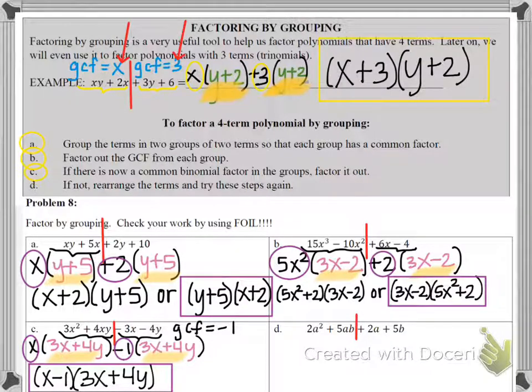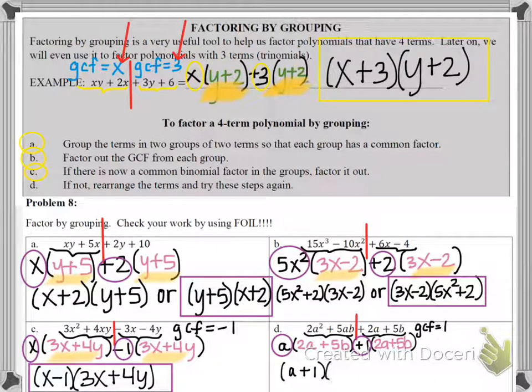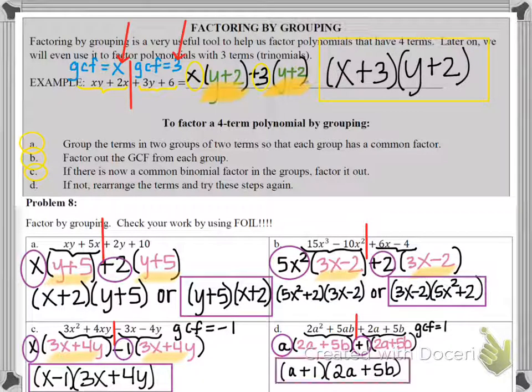And finally, let's look at part D. I'm going to split it down the middle. The first two terms have a GCF of a. So that leaves me with a times 2a plus 5b. Now, the second two terms, the 2a plus 5b, they don't have anything in common. But notice, 2a plus 5b matches the binomial from the first part of the problem. So since they don't have anything in common, the only thing I can factor out is a positive 1. So my GCF is just 1. And then 2a plus 5b just stays the same. But now I have matching binomials. So the a plus 1 makes my first binomial for my final answer. And then the 2a plus 5b makes my second binomial.